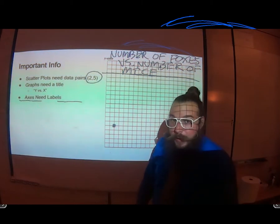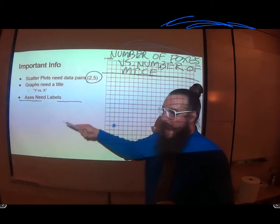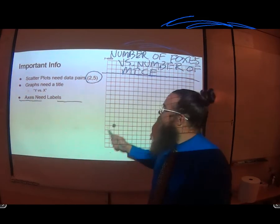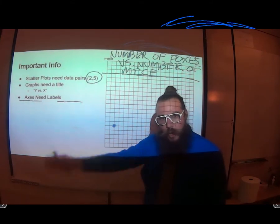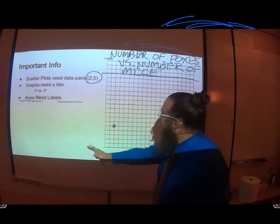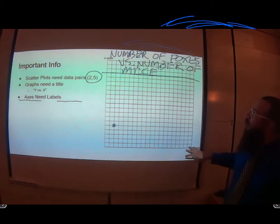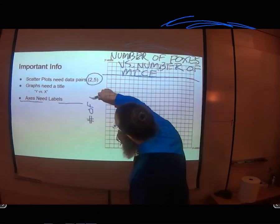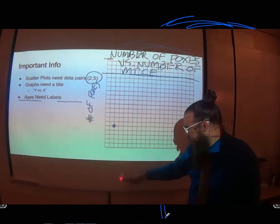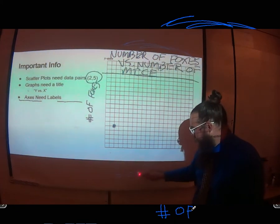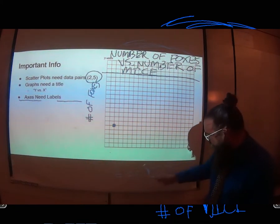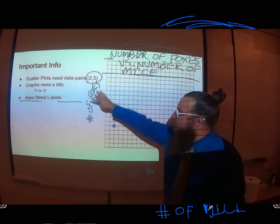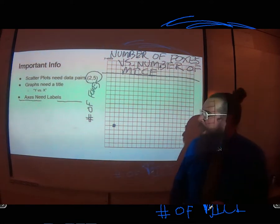Your axes also need to have labels on them. Every graph always gets labels on the axes. Super important. So on this graph, remember it's y versus x. On the y-axis, that's the up and down, the karate chopping axis, we're going to write number of foxes. And on the x-axis, we're going to write number of mice. Number of foxes on the y-axis versus number of mice on the x-axis.